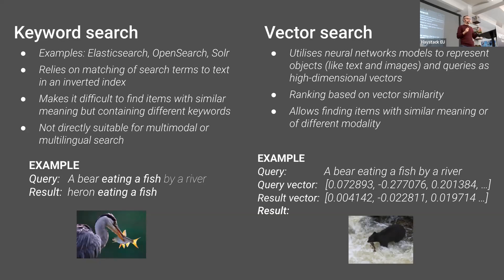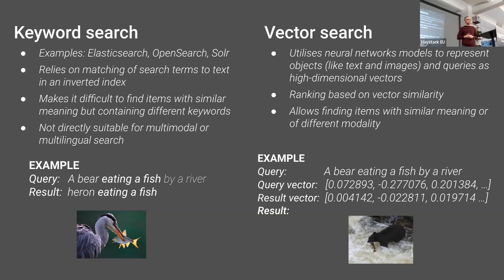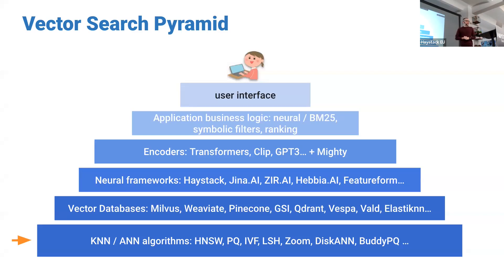Vector search, on the right, addresses this by using a neural network to represent objects as dense embeddings — vectors where every dimension has a value, unlike sparse inverted indexes with many zeros. The same query gets embedded into a 512-dimensional vector, and the system returns semantically similar results. For instance, the bear query returns an image of a bear in a river — not exact, but much more relevant than keyword matching.